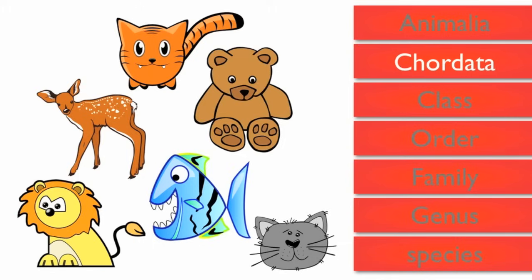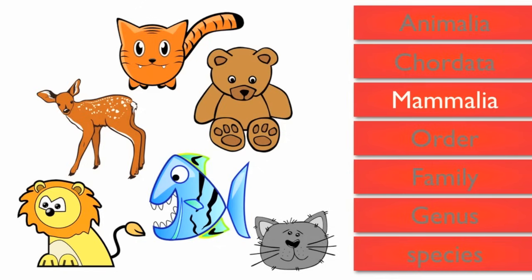Class is the name of the next level of classification. The class that the lion belongs to is called Mammalia. Scientists use Greek or Latin words for the levels because they are understood everywhere. Mammalia means mammal, or animals with hair or fur. The fish is removed from our group because it's not a mammal.